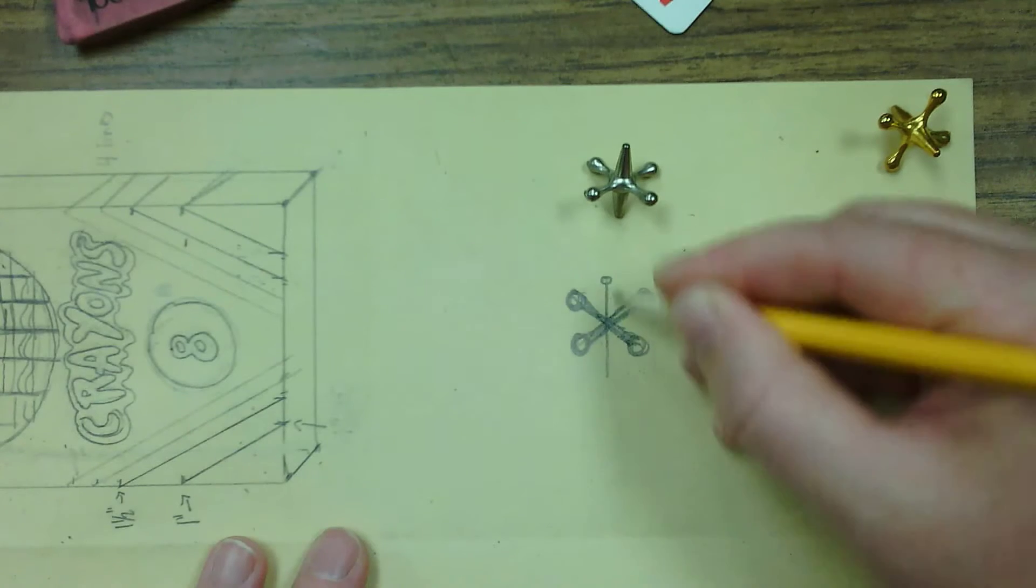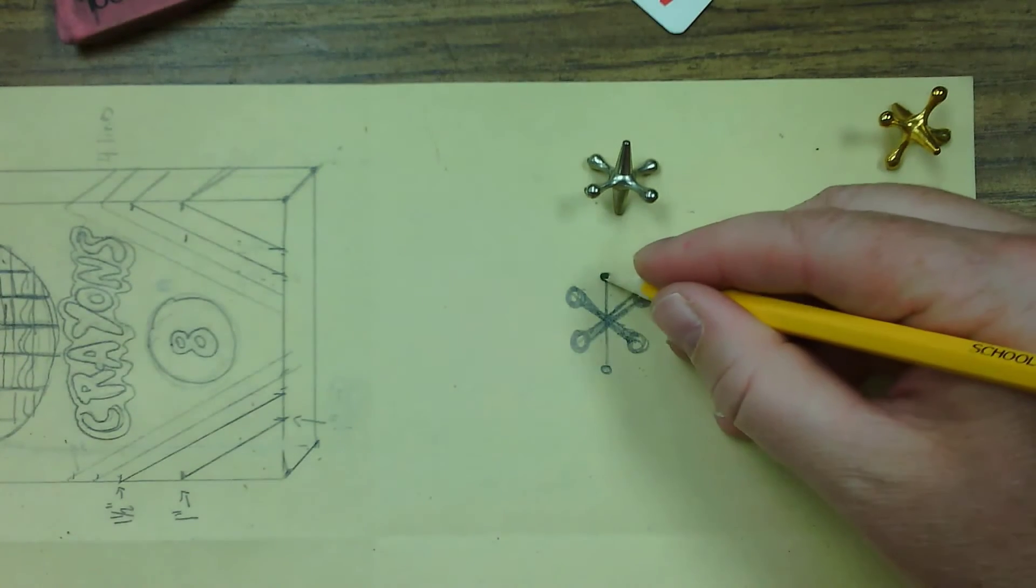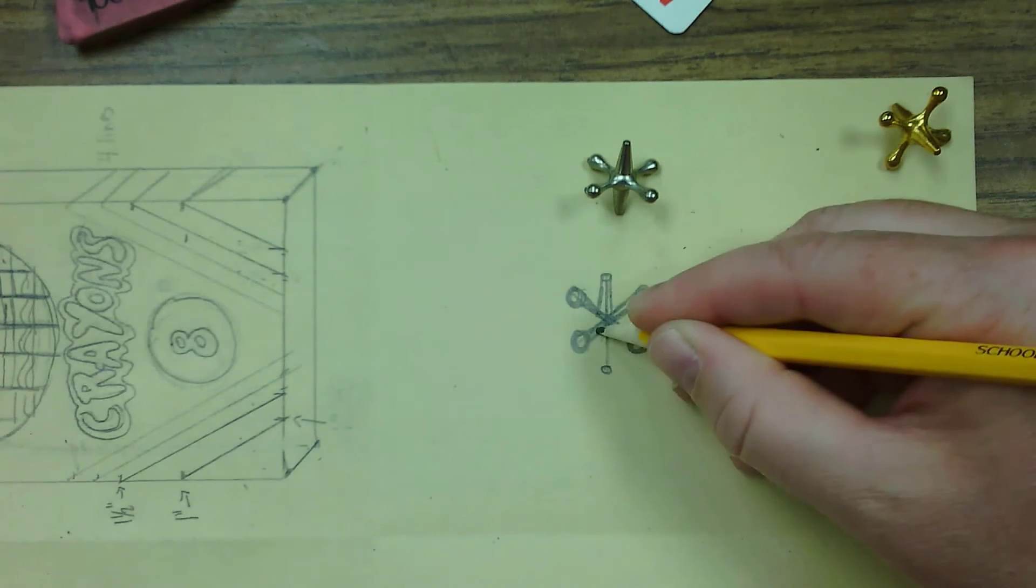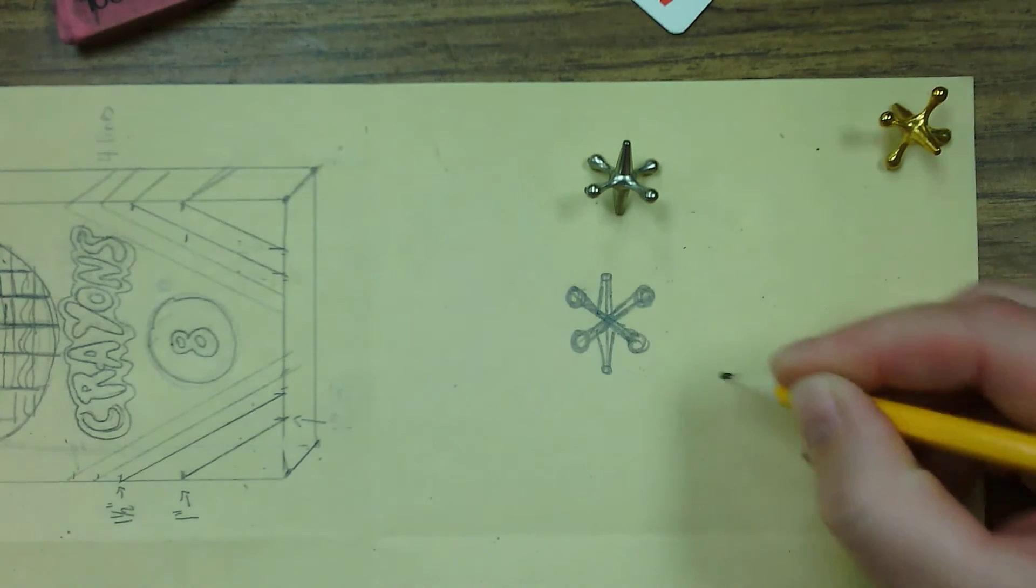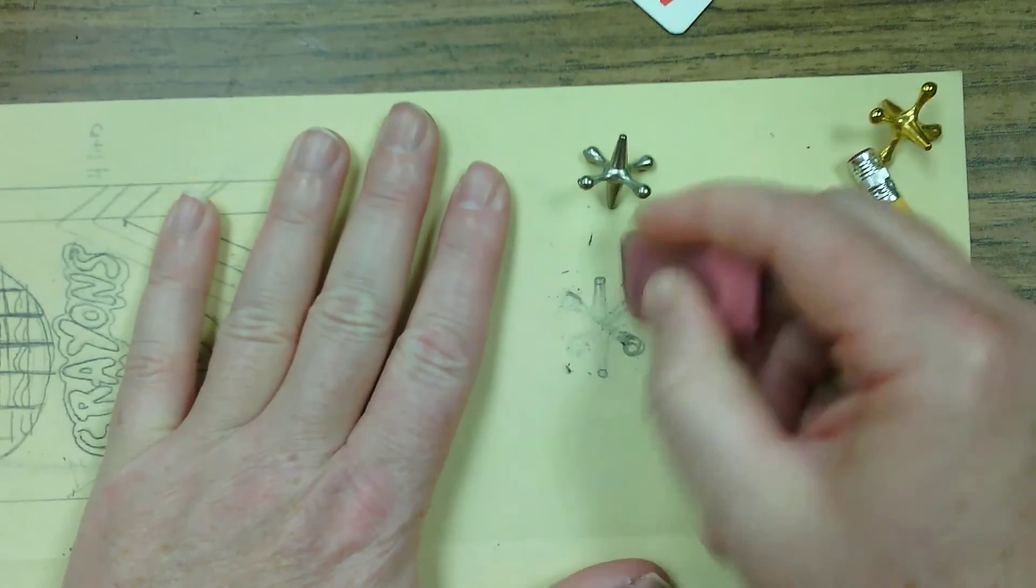And then draw a line going down the center. Draw an oval on the top and the bottom. And from the sides of those ovals, draw two lines angling out to make kind of a cone shape.